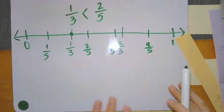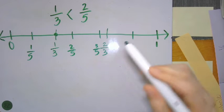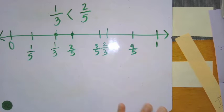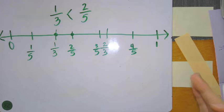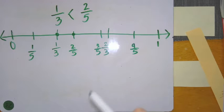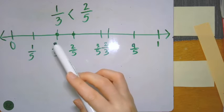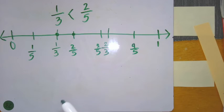Now I'm going to go ahead and plot my two-fifths. So now that I have both fractions plotted, this is a visual on my number line of which one is closer to one whole. Just looking at my number line, I see that two-fifths is closer to my one whole. So two-fifths is greater than one-third — or, saying it the other way, one-third is less than two-fifths. And that agrees with my comparison sentence. Yes, that's true.